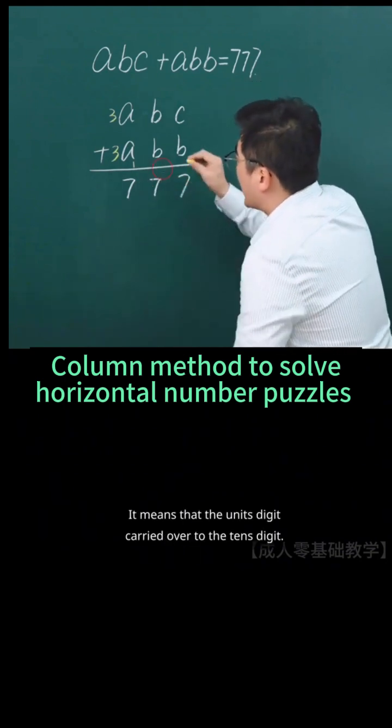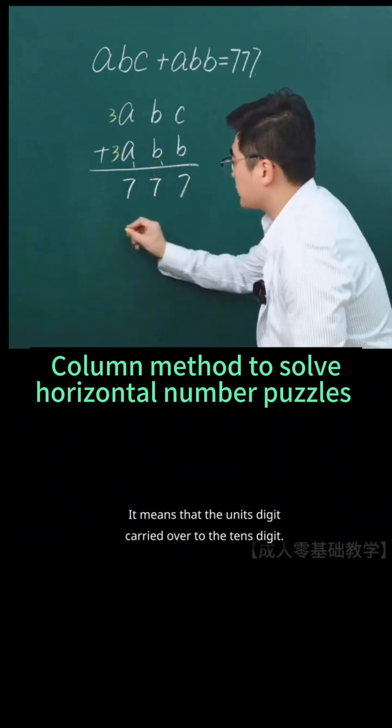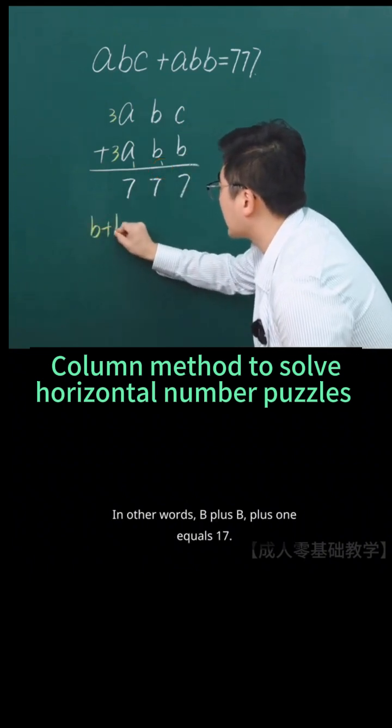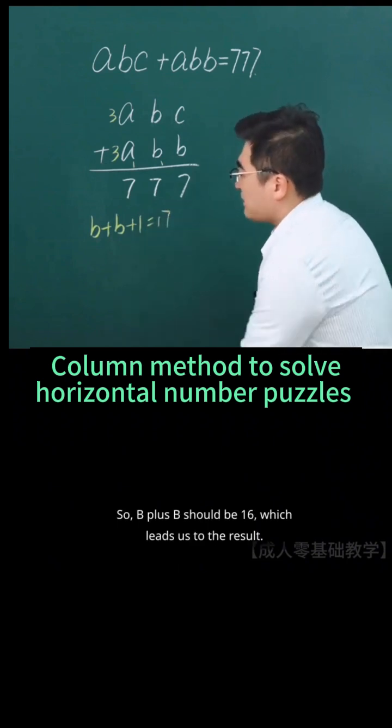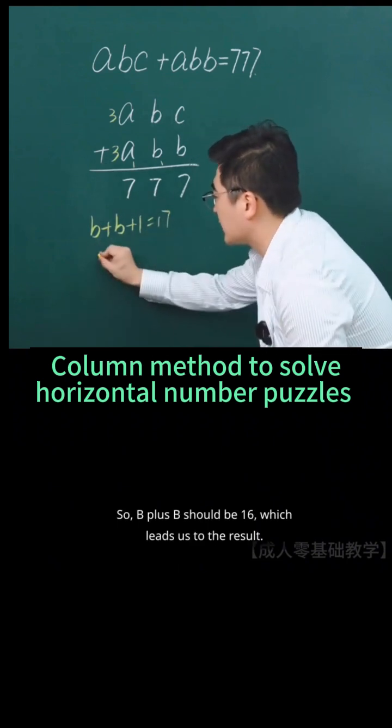What does this indicate? It means that the unit's digit carried over to the tens digit. In other words, B plus B plus 1 equals 17. So B plus B should be 16, which leads us to the result. B is 8.